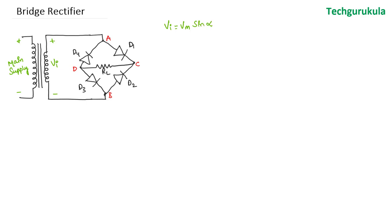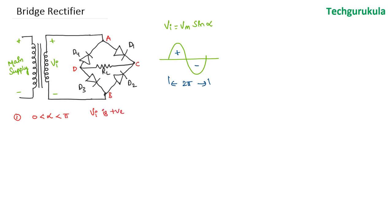VI is Vm sin(ωt), where ωt is taken as alpha for simplicity. We know this waveform: over the period 0 to π we have a positive value, and π to 2π we have a negative value. Let's take the first case where alpha is between 0 and π, in which case VI is positive. When VI is positive, the potential at node A would be at higher potential than node B.